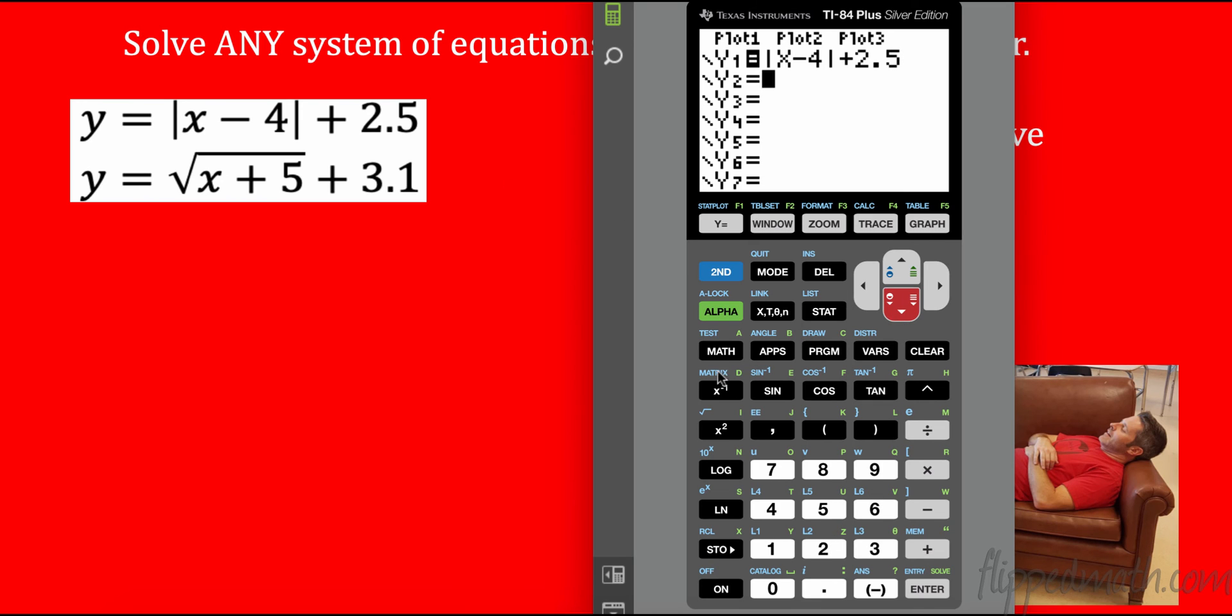And on the outside, I put plus 2.5. I'm going to go down. Now, this one, I need the second function of that, second square root function of X plus 5. Now, when you're in something, you need to get out, you have to arrow out of it, plus 3.1. And press equals. Biggest problem I see with kids and characters, they put stuff in wrong. All right. So let's graph it.